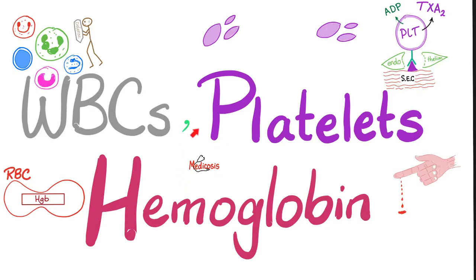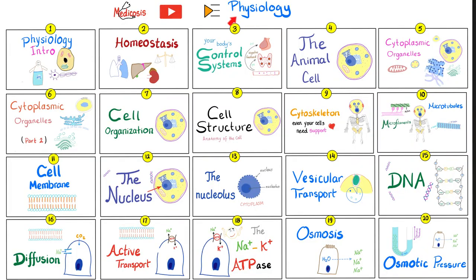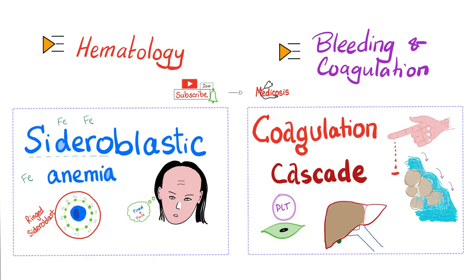Hey guys, it's Medicosis Perfectionitis, where medicine makes perfect sense. Let's continue our physiology playlist. In this video, we will review white blood cells, platelets, and hemoglobin. This is video number 62 in this playlist. Today we'll review the topics quickly. For a more robust explanation, check out my hematology and bleeding and coagulation playlists where we go over more detail.